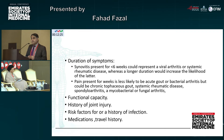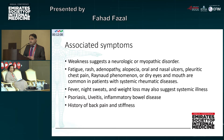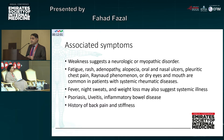In history taking, it is important to assess their functional capacity, take history of joint injury, risk factors and history of infection, medications, and travel history. Associated symptoms: weakness usually suggests a neurological or myopathic disorder. Whereas other symptoms such as fatigue, rash, adenopathy, alopecia, ulcers, chest pains, and Raynaud phenomena usually suggest a systemic rheumatic disease. Fever, night sweats, and weight loss may also suggest a systemic illness.